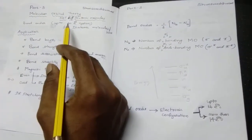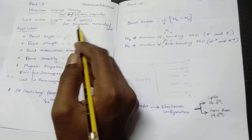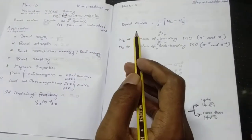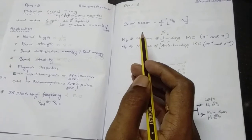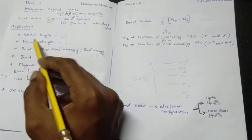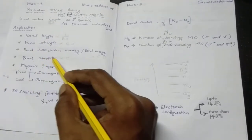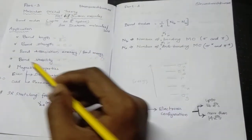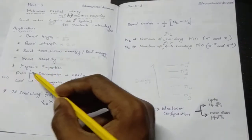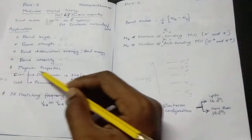Bond order for up to 20-electron systems for diatomic molecules or ions. If we know the bond order of diatomic molecules or ions, we can solve for the following: bond length, bond strength, bond dissociation energy or bond energy, bond stability, higher stretching frequency, and magnetic properties.